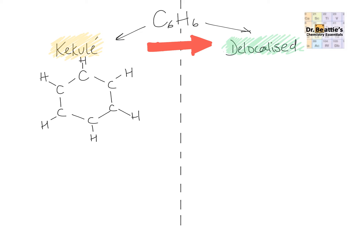To account for the connectivity — carbon always needs four bonds around it — and also the fact that it's highly unsaturated, this is where the alternating double bonds fit in. So we have double bond, single bond, double bond, single bond, double bond. And that was Kekulé's structure.